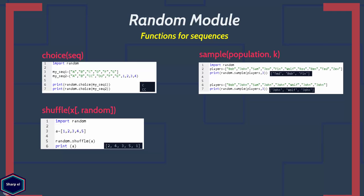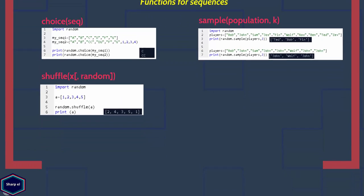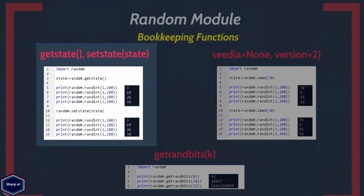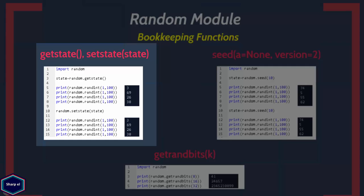Now let's look at the bookkeeping functions, which control the state of the underlying random number generator. The getstate() function returns an object which represents the current internal state of the random number generator. This object can later be passed to the setstate() function to restore the internal state of the random number generator.